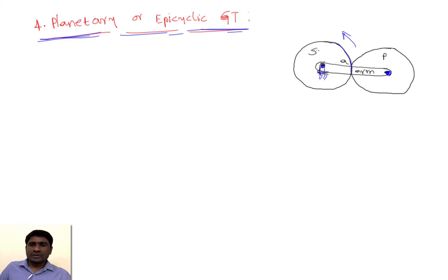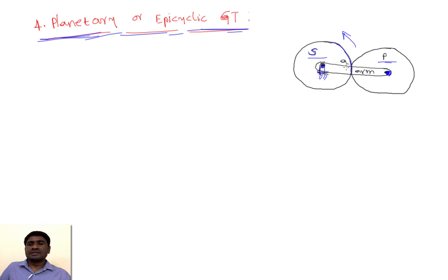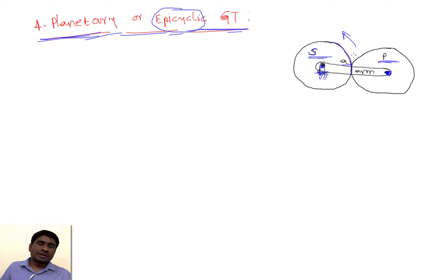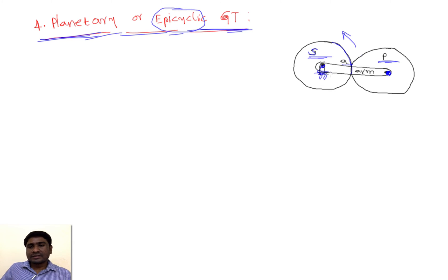Just like the earth revolving around the sun — that's why the fixed gear is generally called the sun and the rotating one is a planetary gear. That's why the name 'planetary gear line' came. And why it's called epicyclic gear line: gear P is rotating on the circumference of the fixed gear S, generating an epicycloid profile — so that's why it is also called the epicyclic gear line.